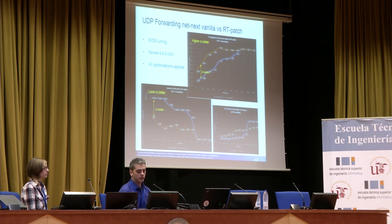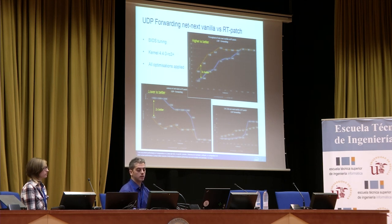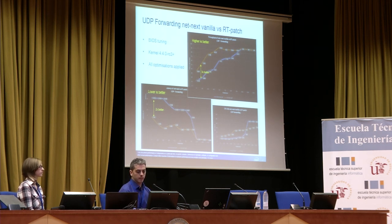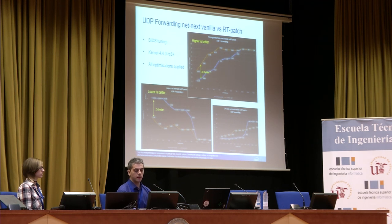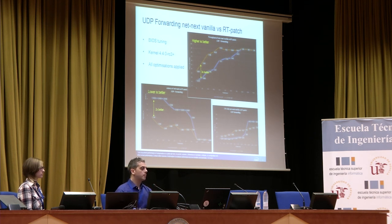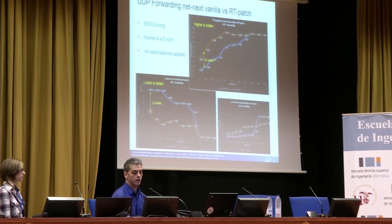When looking at latency, we observed the same type of behavior up to 1024 bytes, with 2x better latency performance. The CPU idle time of the RT patch version of the kernel was much better — almost double the number of free cycles versus the standard kernel. It wasn't a surprise that the two kernel versions eventually converged at larger packet sizes, because the number of interrupts and packets going through the system is much lower at larger packet sizes.